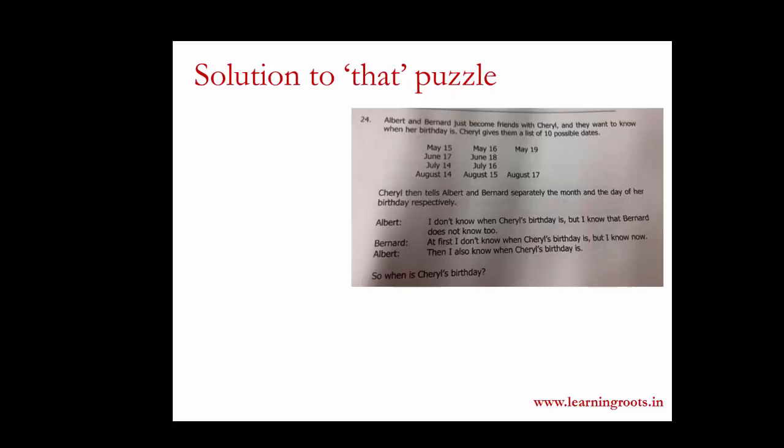In this puzzle Albert and Bernard have just become friends with Cheryl and they want to know her birthday. She has given them 10 possible dates. Now Cheryl tells Albert and Bernard separately the month and day of her birthday.